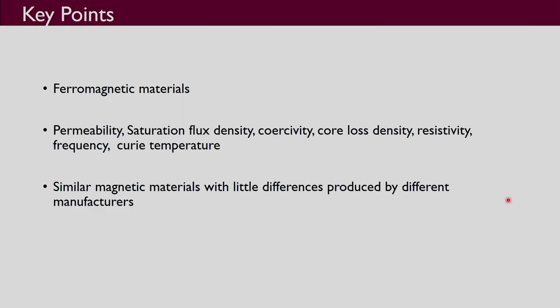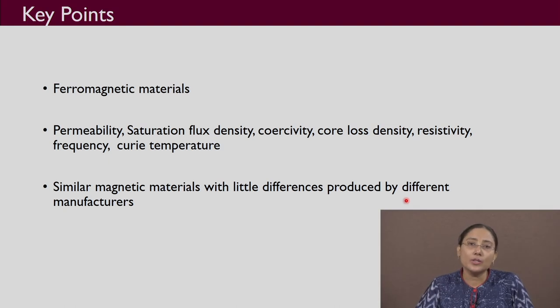The key points of this lecture: ferromagnetic materials are used for magnetic design, and the important parameters are permeability, saturation flux density, coercivity, core loss density, resistivity, frequency range, and Curie temperature. Similar magnetic materials with slight differences are produced by different manufacturers, and by comparing parameters you can select the magnetic material most suitable for your application. Thank you.